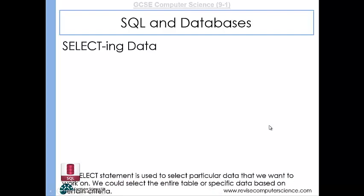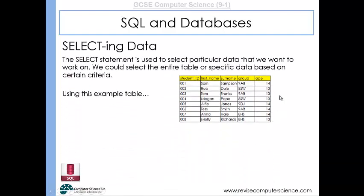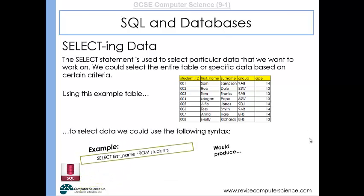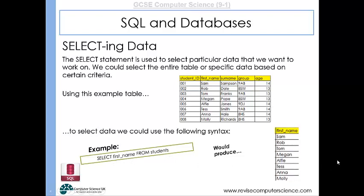If we wanted to select data — let's imagine we had this database table — we could select the entire table or select specific data based on certain criteria. For example, if we wanted just all of the first names of the students, we would write: SELECT first_name FROM students. That selects the column 'first_name' from the table called 'students' and produces just the first names of every student.